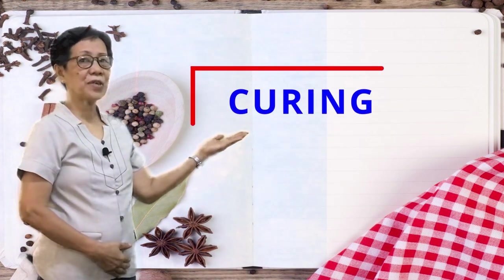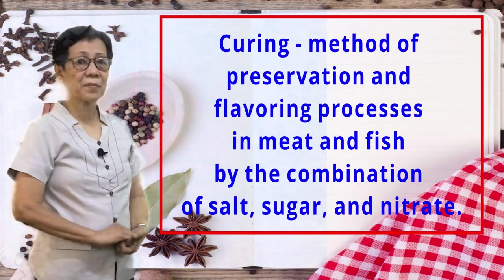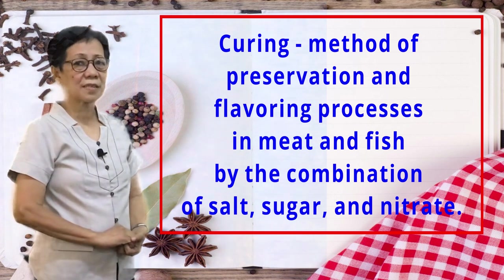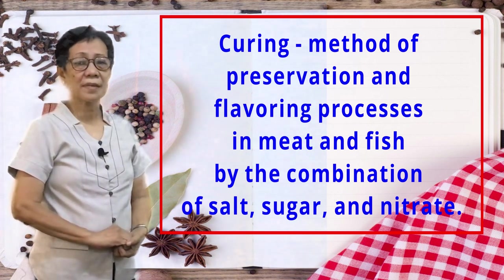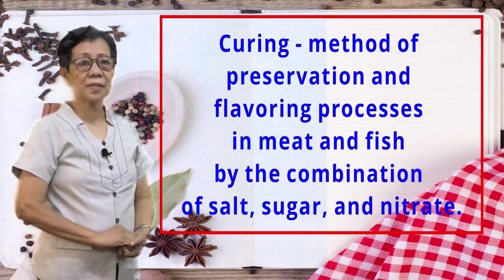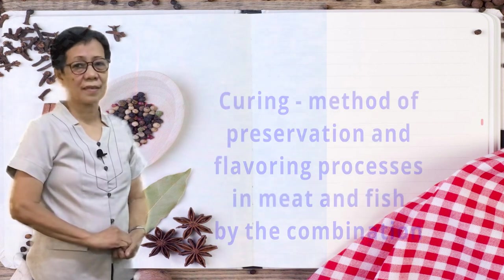Letter B: Curing. This is a method of preservation and flavoring of meat by the combination of salt, sugar, and nitrate. Here are examples of food or products produced through curing.